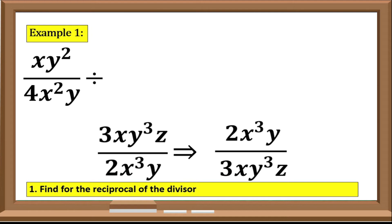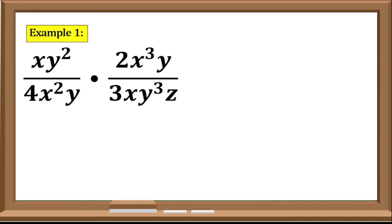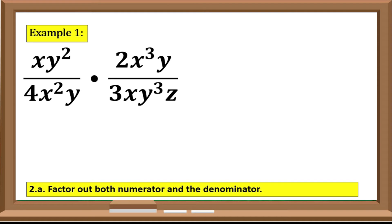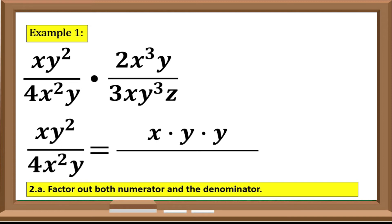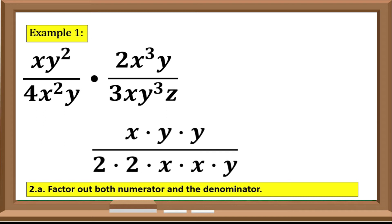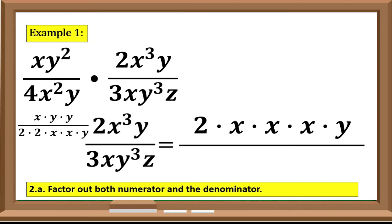Step 2: Proceed to the multiplication. Next, factor out both numerator and denominator. For the first expression xy² over 4x²y: the numerator xy² factors as x times y times y, and the denominator 4x²y factors as 2 times 2 times x times x times y. Now for the second expression 2x³y over 3xy³z: the numerator 2x³y factors as 2 times x times x times x times y, and the denominator 3xy³z factors as 3 times x times y times y times y times z.